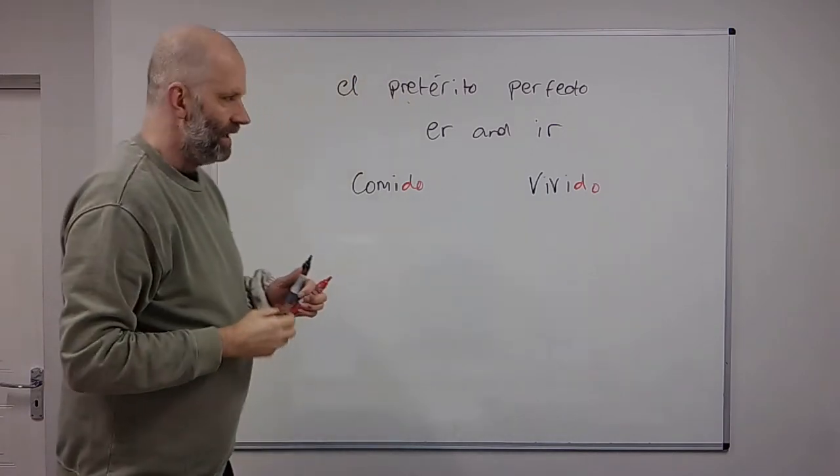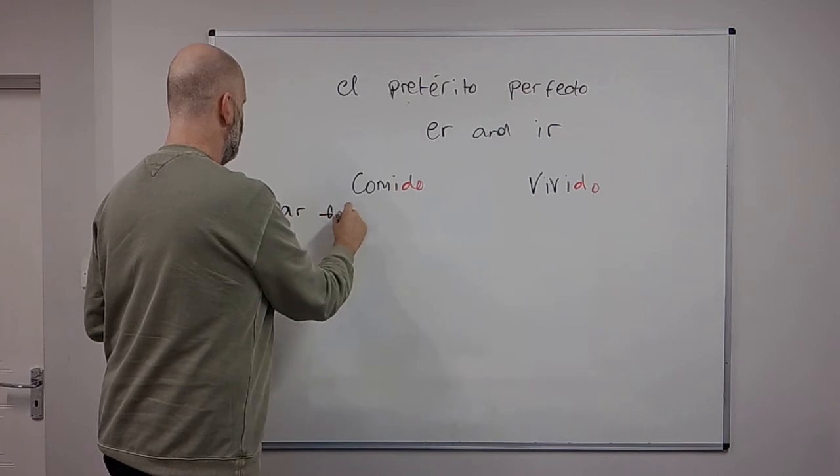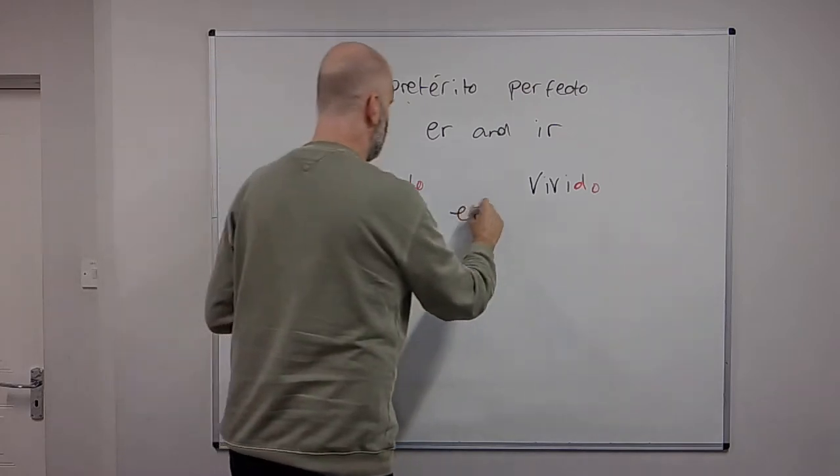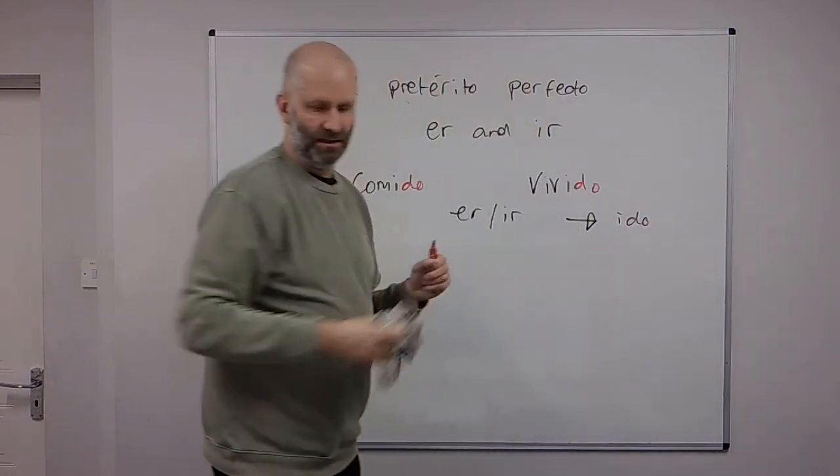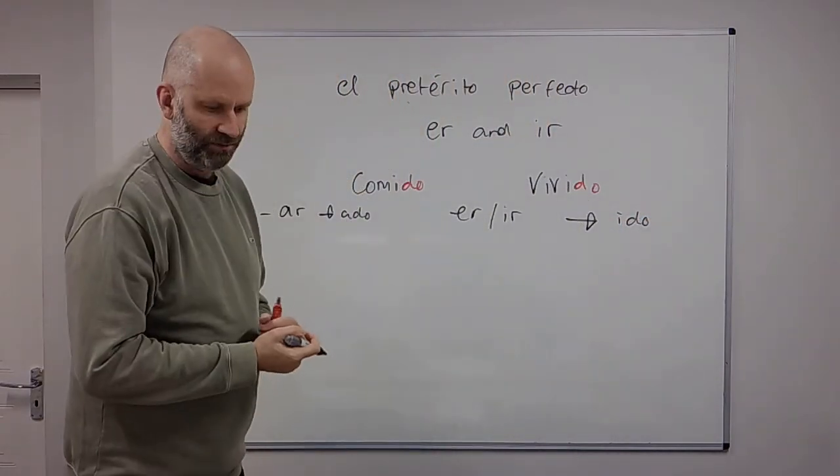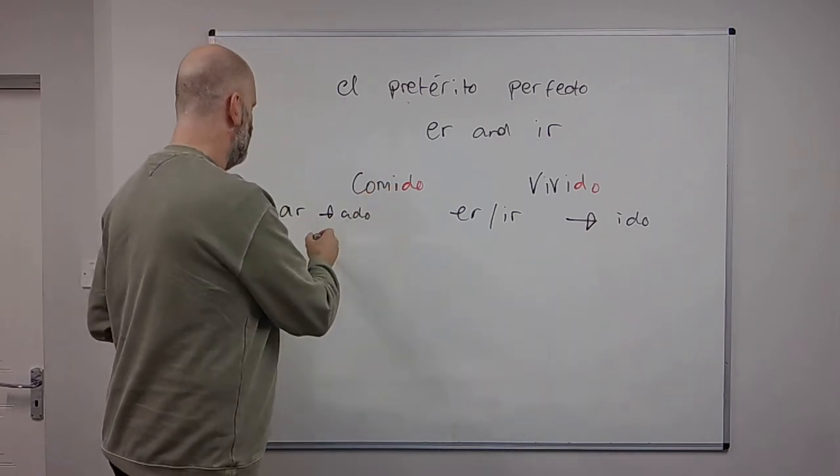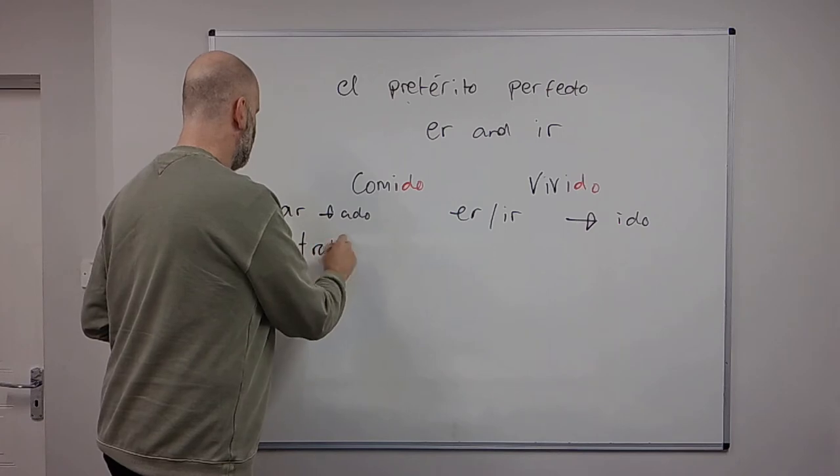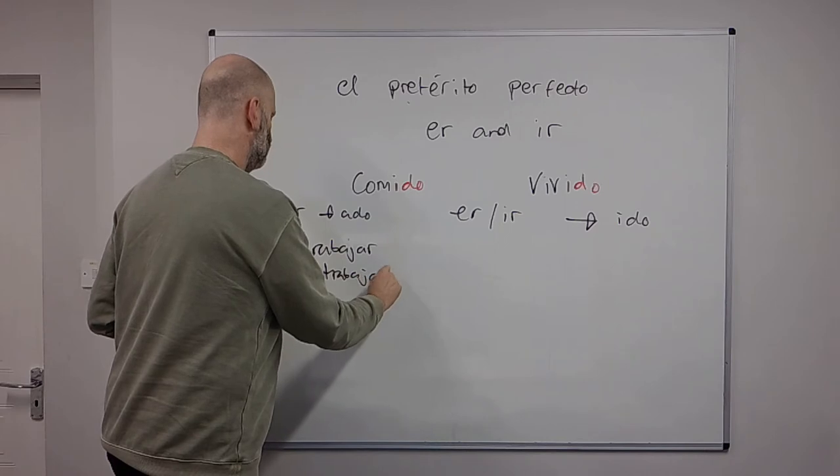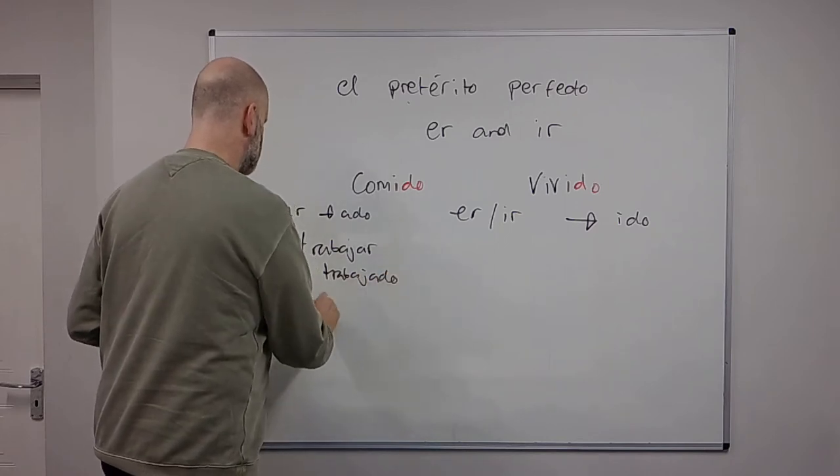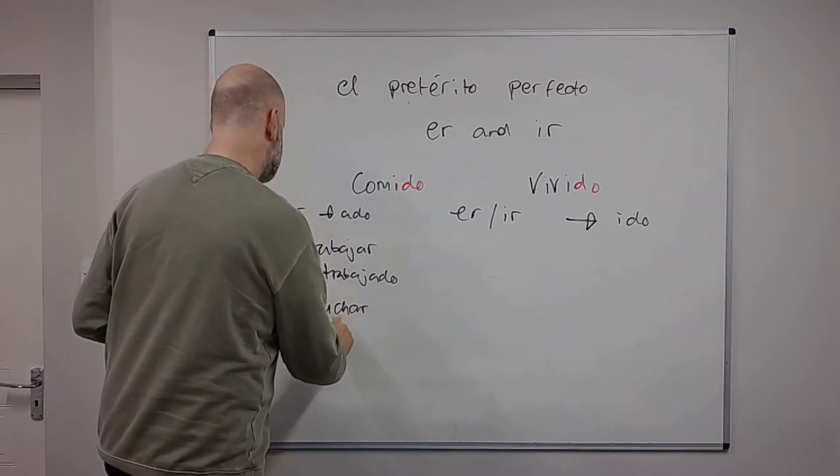Okay, so it's very easy. If you've got an AR verb, it changes to -ado, and ER and IR change to -ido. So if we look at some examples of more examples of AR verbs, we've got trabajar becomes trabajado, escuchar, to listen, to be listened will be escuchado.